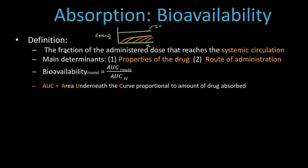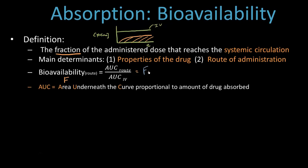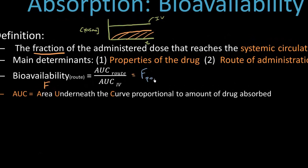Bioavailability is a fraction, so it's often written as F. The bioavailability PO is equal to the AUC PO — that is, if I gave a certain mass of drug by mouth, how much of that drug is getting into the systemic circulation — divided by the AUC IV, or how much of that drug would have gotten into my systemic circulation had I given it intravenously.